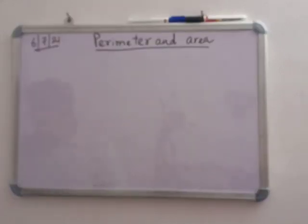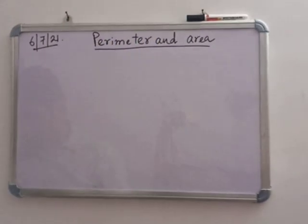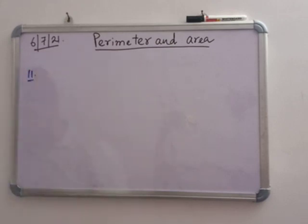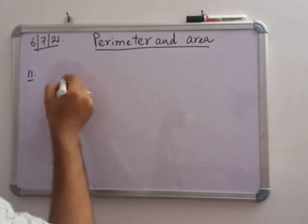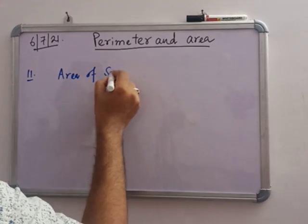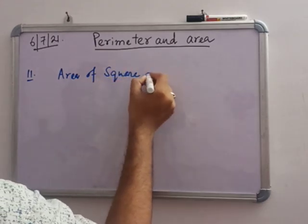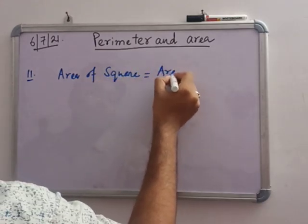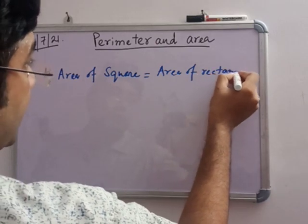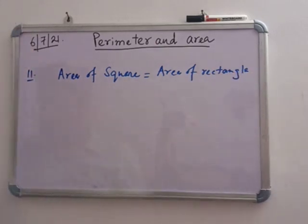Now in number 11, a square and a rectangle have equal areas. That means area of square equals area of rectangle. Each side of the square is given as 80 centimeter.